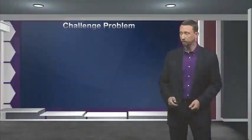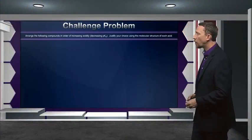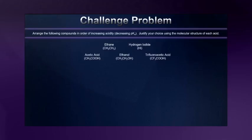Let's test our understanding of how structures of molecules affect their acidity using a challenge problem. Let's arrange the following compounds in order of increasing acidity or decreasing pKa based upon their structures and our analysis of them. Here are our five compounds: acetic acid, ethane, ethanol, hydrogen iodide, and trifluoroacetic acid with their molecular formulas beneath. But remember, if we want to really analyze their acidity, we have to think about their structures, not just their formula. So let's put those structures up now.